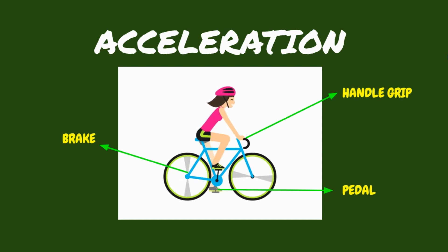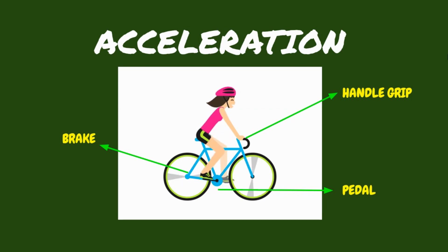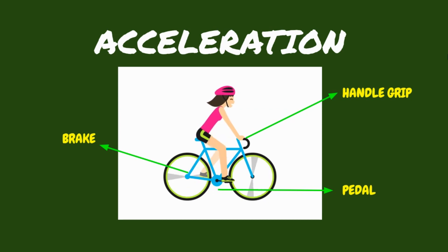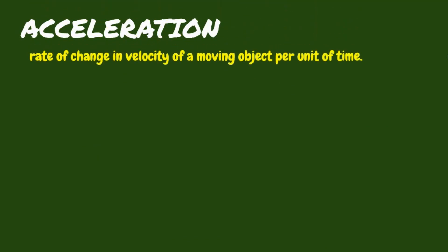If you have experience riding a bike, you probably know that a bike accelerates. But what is acceleration? In physics, acceleration is defined as the rate of change in velocity of a moving object per unit of time.